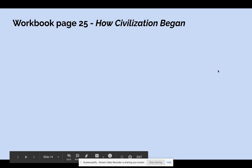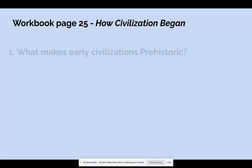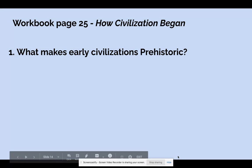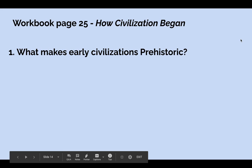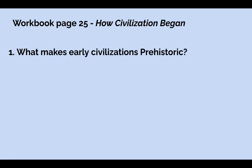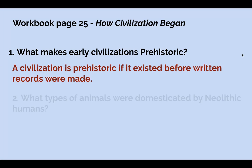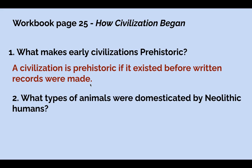Now that we've watched the video, let's look at the questions on page 25. Question one asks: what makes early civilizations prehistoric? Think of the word prehistoric. You can stop the video, go back and watch the clip, and answer the question. A civilization is prehistoric if it existed before written records were made. That's what prehistoric means — the time before history was written down.